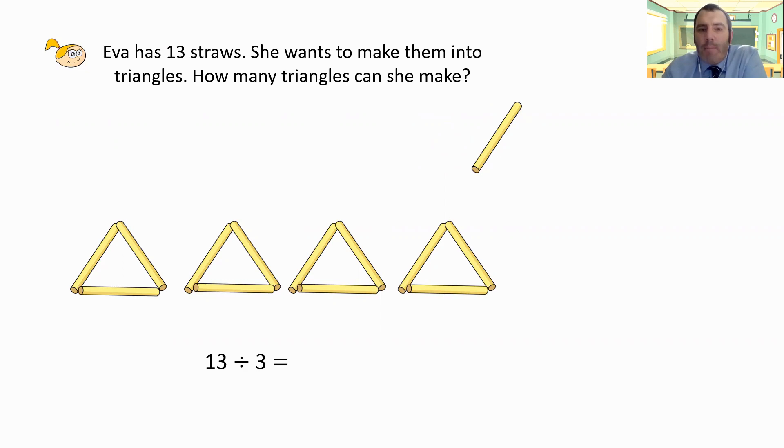How do we write this down? What we need to remember to do is four and then the letter R and then the number that's left over. If we just wrote down four and one, you could be said that you've written 41, which would be an incorrect answer. You need to make sure that you write it down correctly. So we've got four complete groups of three, four complete triangles, and we've got a remainder of one.